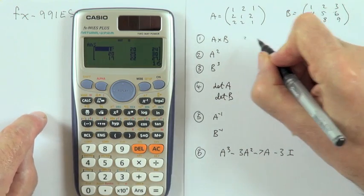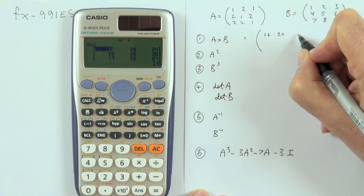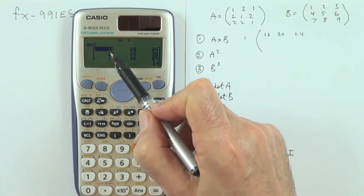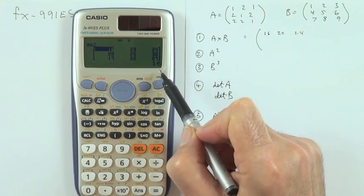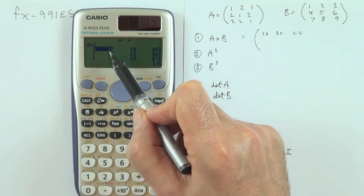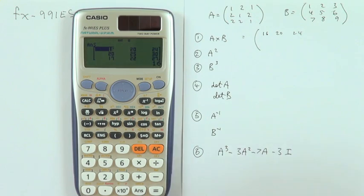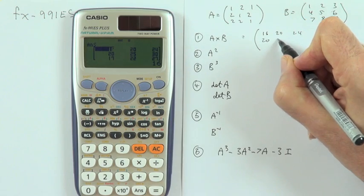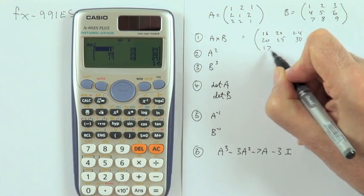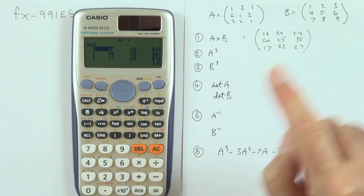Take a wee note of that, just so I can compare it with something in a minute. That says 16, 20, 24. It's quite a handy thing here. Moving the cursor about produces the answer to that element below. Since they're all whole numbers, it makes no difference. But if they were decimals, down here it would give the rational equivalent, if it had one. Oh, I forgot what I was doing now. 20, 25, 30, 17, 22, 27.